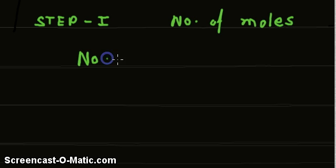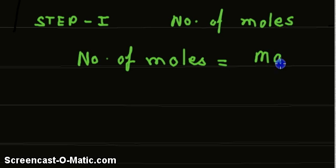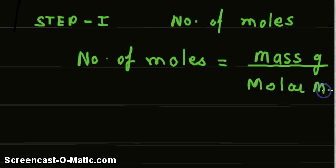Step one: to find number of moles. The number of moles of ethanol and methanol equals mass in grams divided by molar mass.